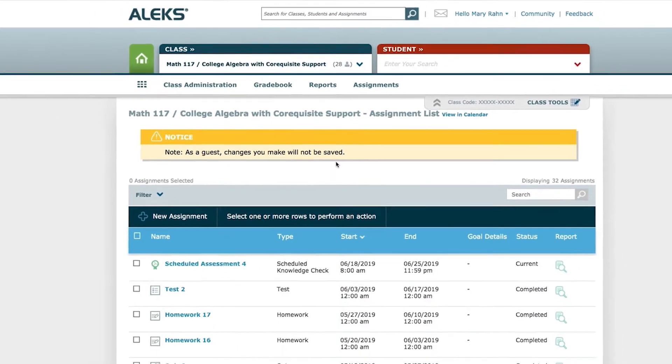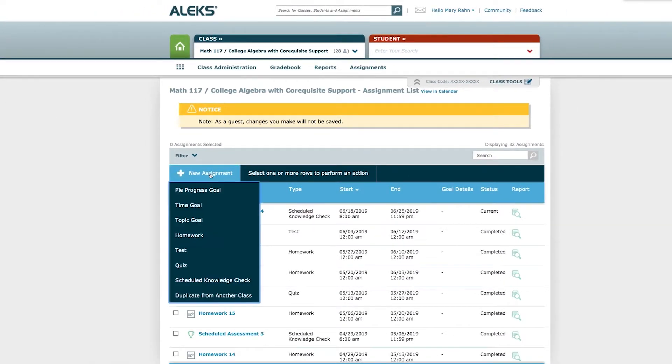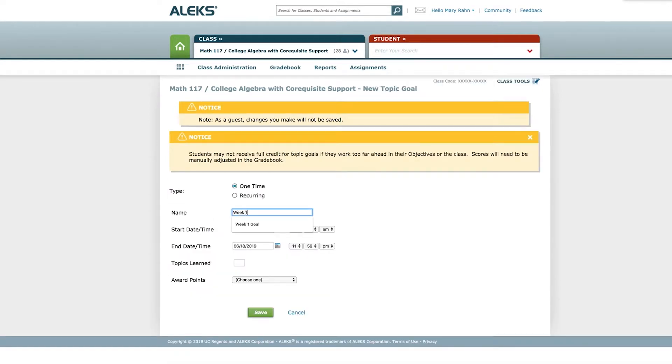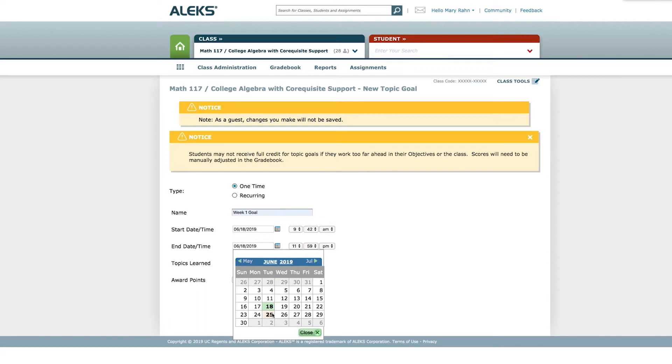Go to Assignments, click Manage Assignments, and then click New Assignment. Finally, select Topic Goal. You can work with your ALEKS Implementation Manager to utilize different topic goals and when you might consider implementing them.